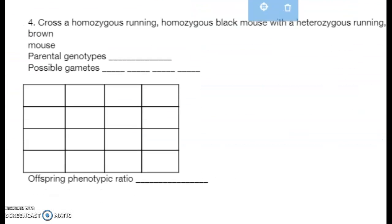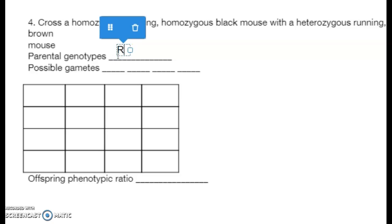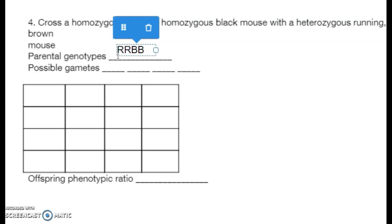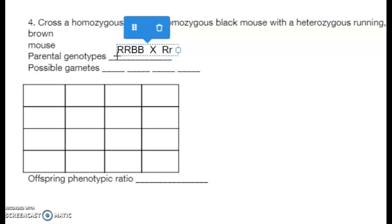Number four: we're crossing a homozygous running, homozygous black mouse with a heterozygous running, brown mouse. Homozygous running black is big R big R, big B big B. The other parent is heterozygous running, so big R little r, and brown is the recessive trait: little b little b.